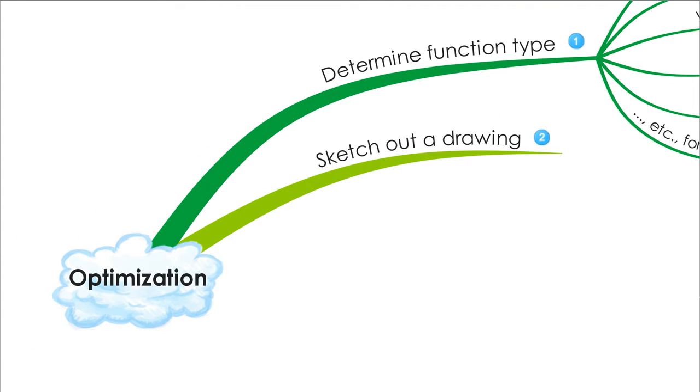The next thing you're going to want to do is sketch out a drawing. You're going to have to read carefully and try to make the drawing as accurate as you can based off the information given in the problem.